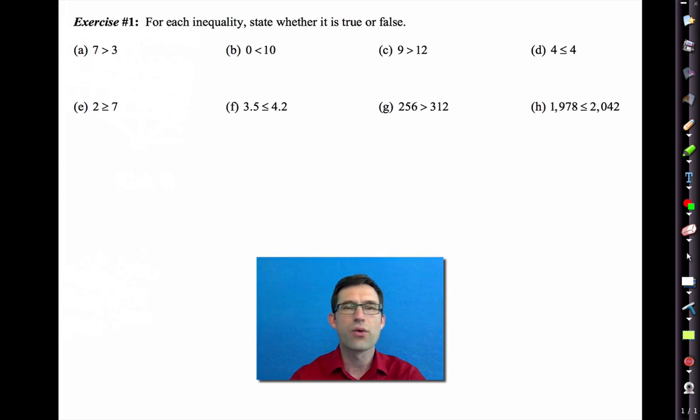All right, let's go through them. Letter A, 7 is greater than 3. Well, that's absolutely true. Letter B, 0 is less than 10. That's certainly true. Letter C, 9 is greater than 12. Oh no, that's definitely false. Letter D, 4 is less than or equal to 4. Well, it's equal to 4, so yeah, that's true.